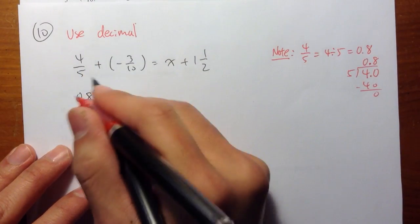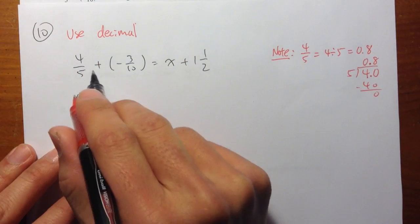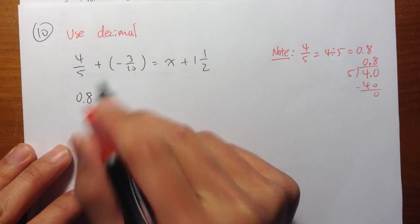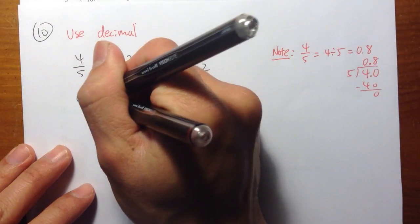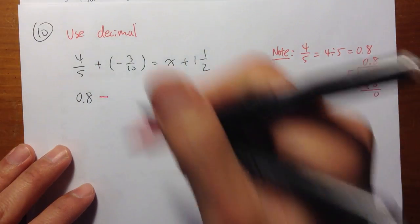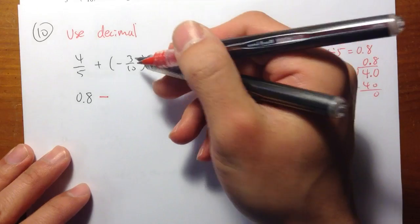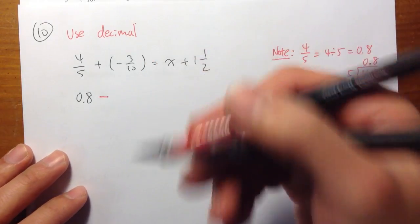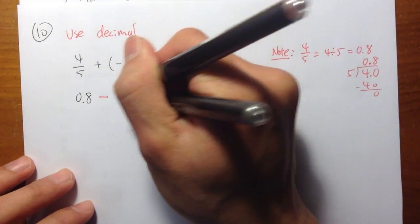For the second number, I have first noticed that positive times a negative is a negative. So I'm going to subtract. 3 over 10 is 3 tenths, which is 0.3. So that's pretty straightforward.